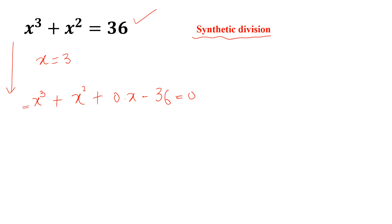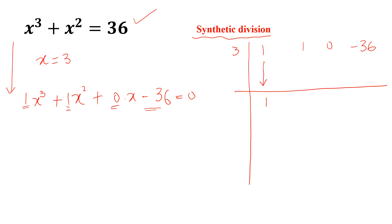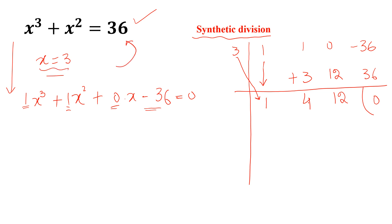Now we write these coefficients: 1, 1, 0, and minus 36. We write these coefficients here and write the known root 3. Then we write 1 here and multiply 3 with 1, so 3. We add these two to get 4, then multiply 3 with 4 to get 12. Again we add these two to get 12, and 12 into 3 is 36, so the remainder here is 0. This confirms it is a perfect solution to this equation.